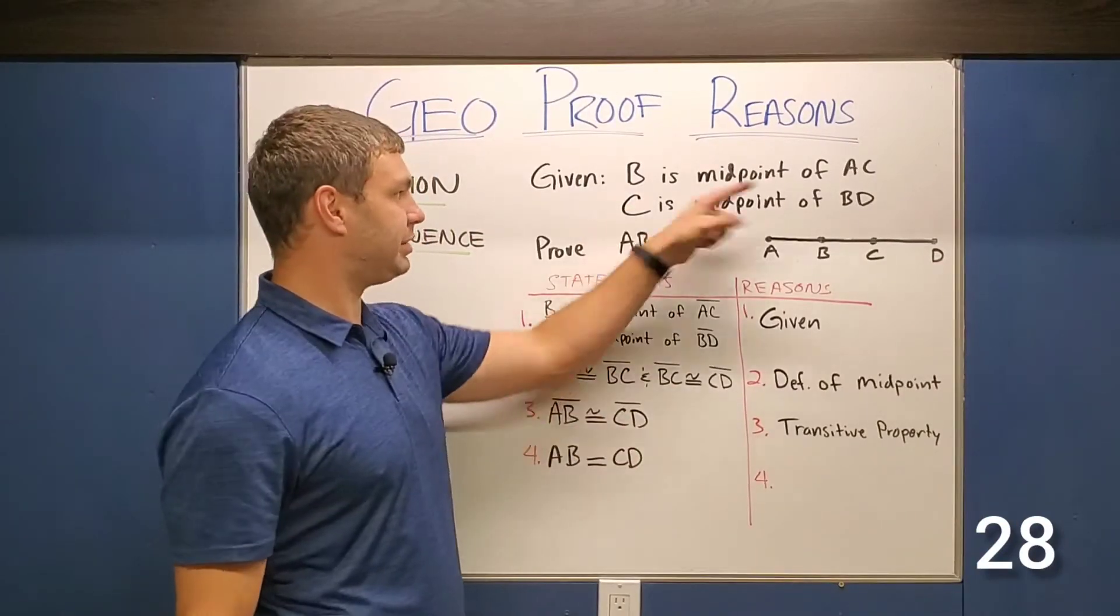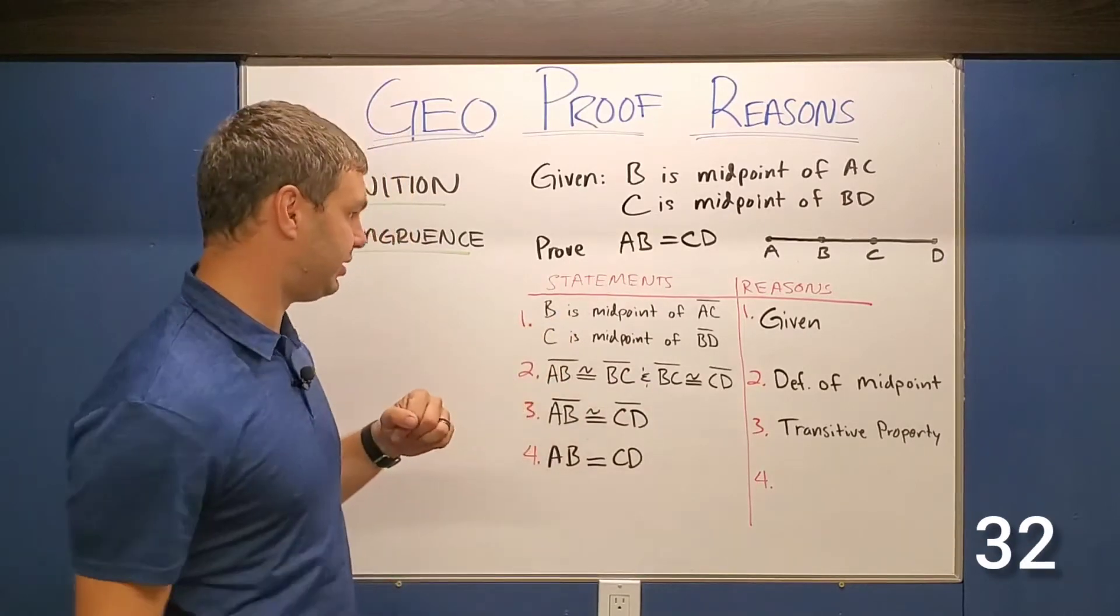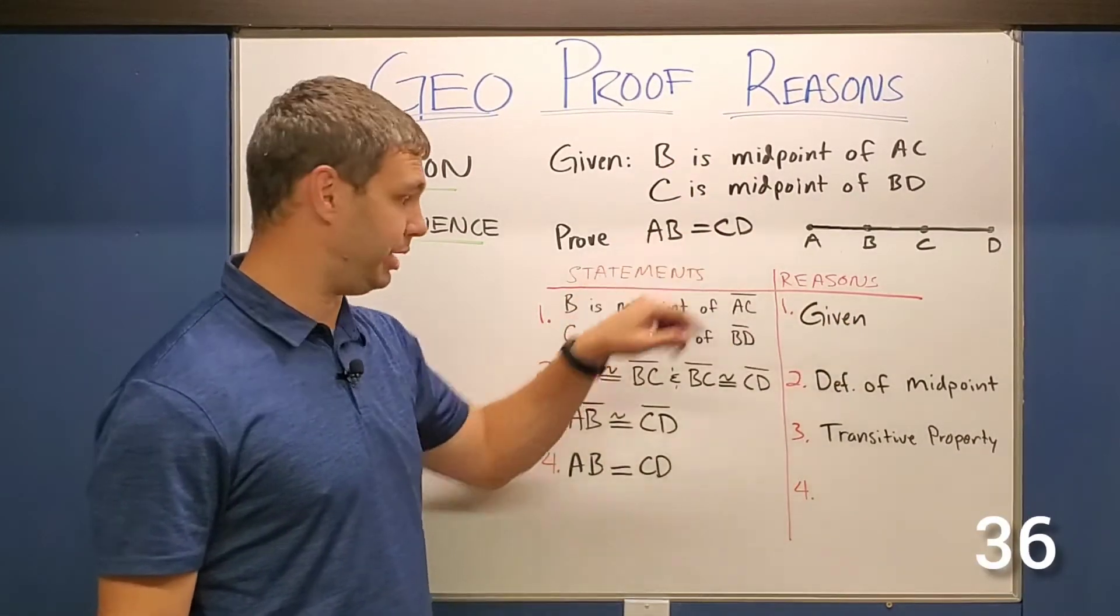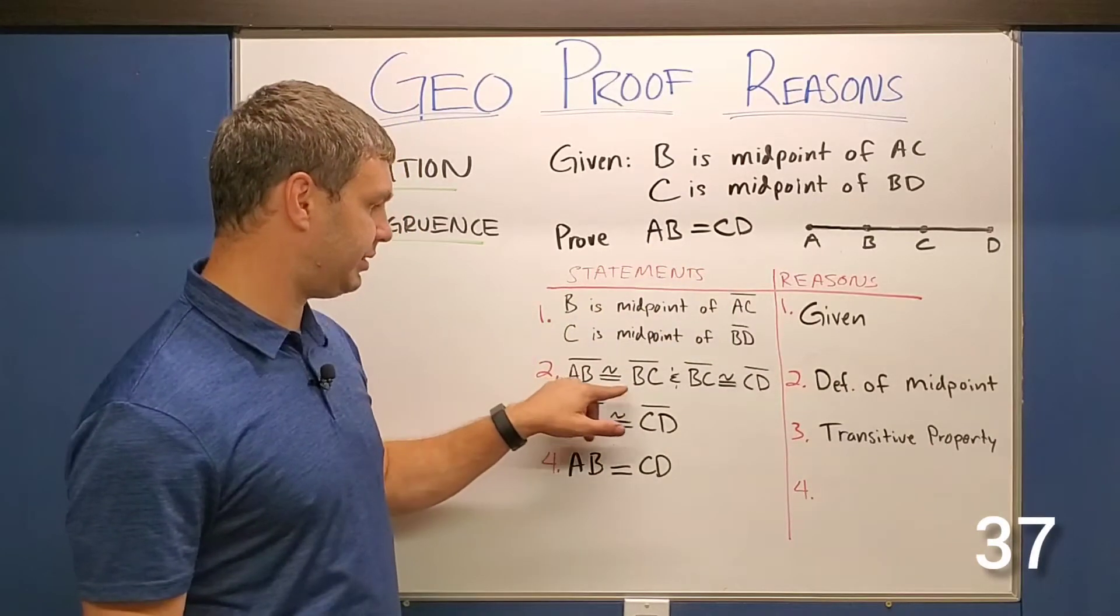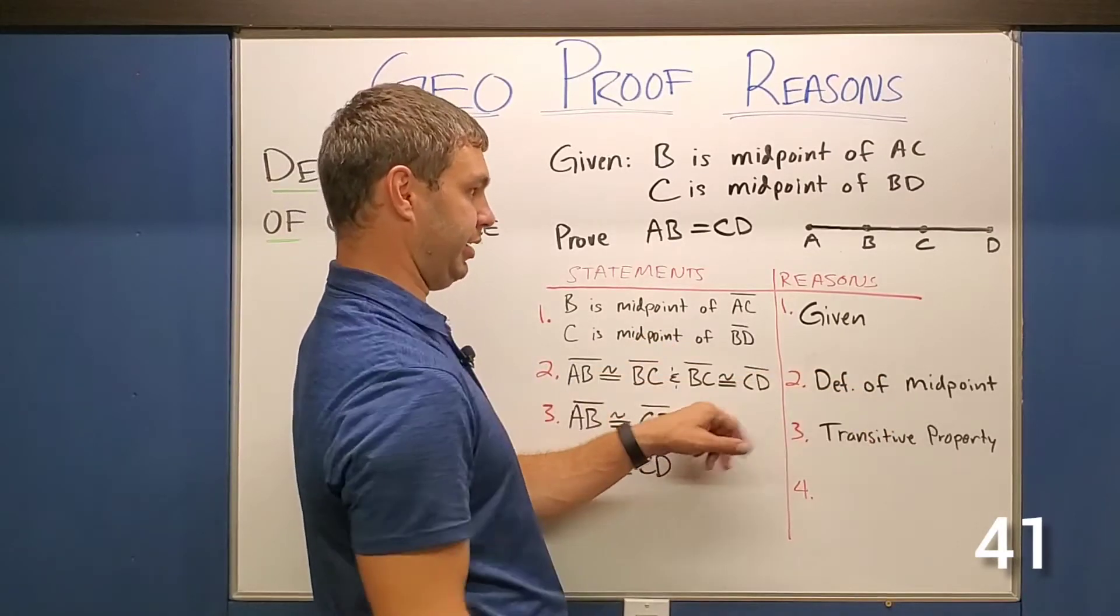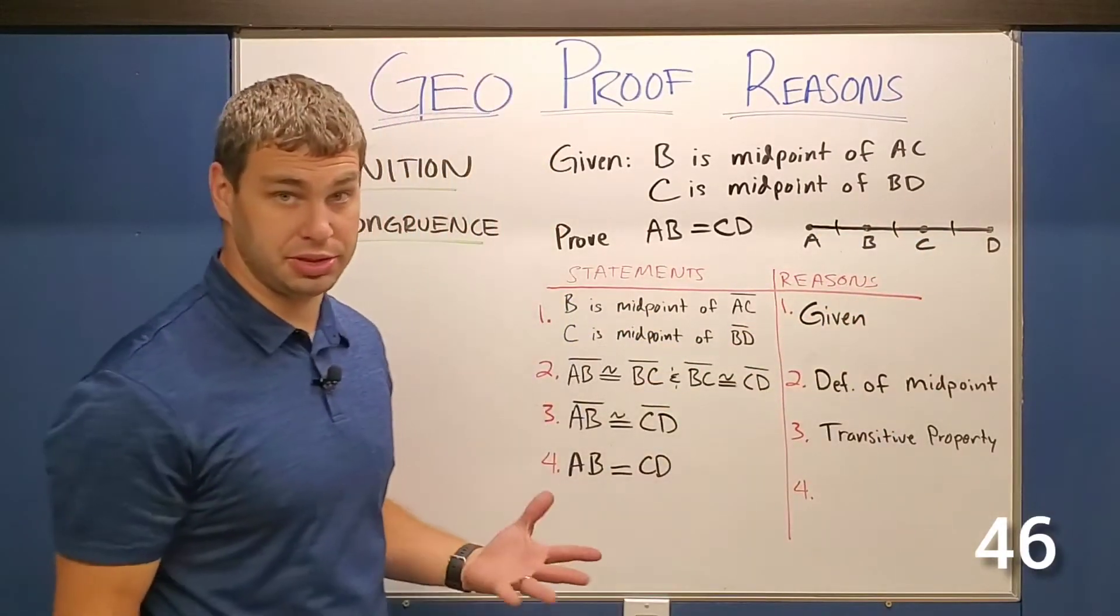Our first proof says that B is the midpoint of AC, C is midpoint of BD and we need to prove that AB is equal to CD. So I have my first couple statements here. Of course that's my given, it was given to me. Then it says that AB is congruent to BC, BC is congruent to CD. Well, I use the definition of a midpoint, so I can actually mark up my picture now and say those are really all congruent to each other.